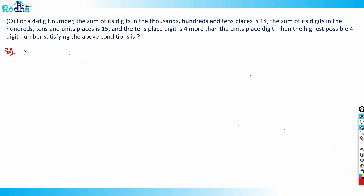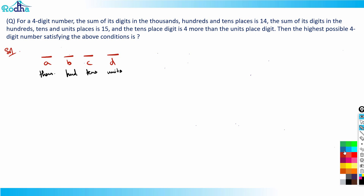Let's look at the next question from CAT 2021 Slot 2. For a 4-digit number, the sum of digits in the thousands, hundreds and tens place is 14. Let's label these digits as a, b, c, and d — where d is units place, c is tens place, b is hundreds place, and a is thousands place. So the first equation gives us: a + b + c = 14.